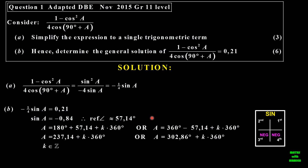Find the reference angle. The sine ratio is negative. Where is it negative? It's negative in the third quadrant and in the fourth quadrant. So you calculate the third quadrant, calculate the fourth quadrant, but we want a general solution. So you add the generating term there, k times 360. And don't forget to add k is an element of the integers.